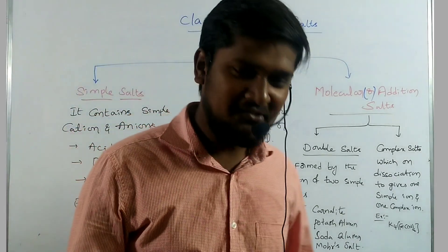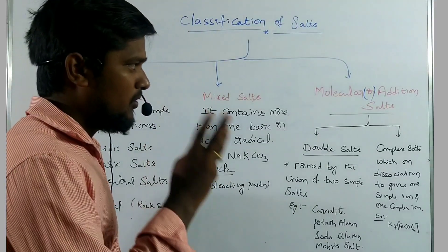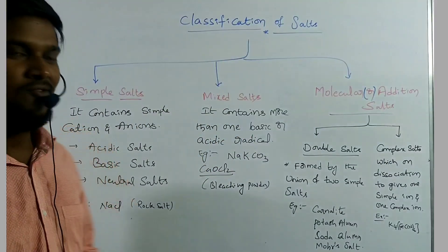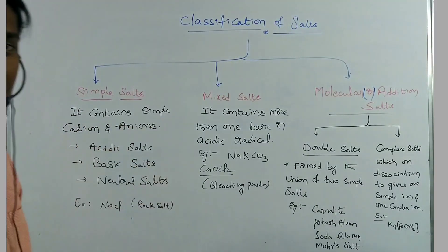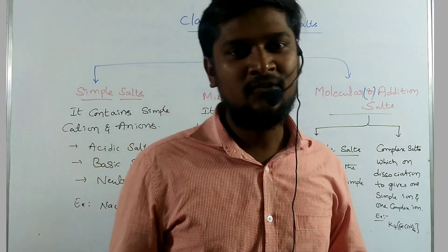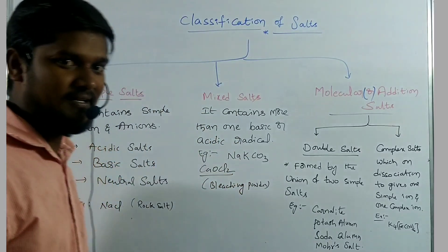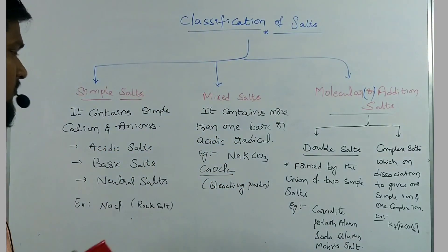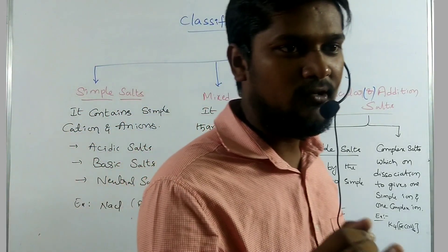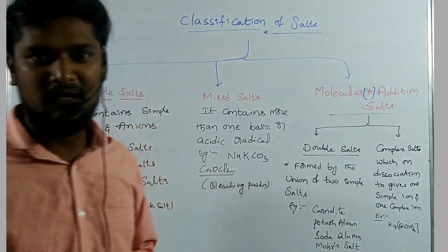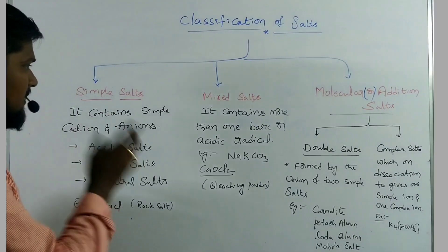Classification of salts: generally, salts are classified into three types — simple salt, mixed salt, and molecular or addition salt. The first one is simple salt; it contains a single cation and anion. The best example is sodium chloride, which contains sodium cation and chloride anion. It is further classified into several types: acidic salt, basic salt, and neutral salt. Sodium chloride is an example of a neutral salt, which came from a strong acid and a strong base.